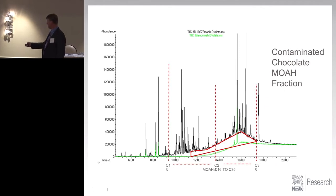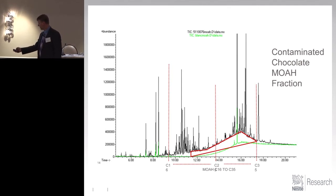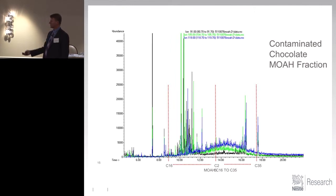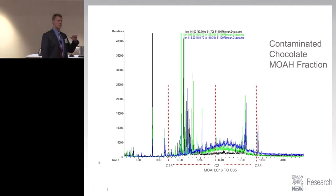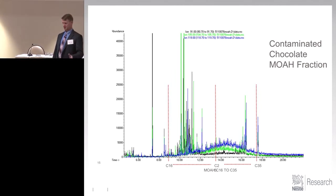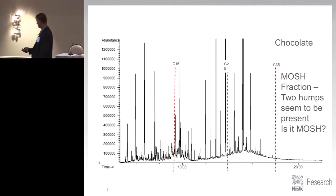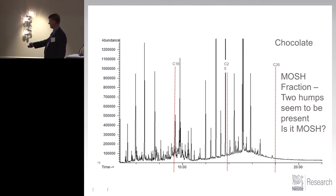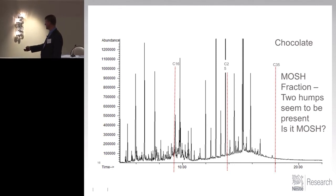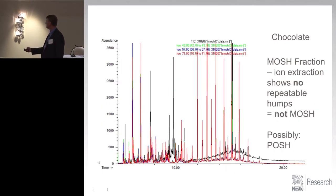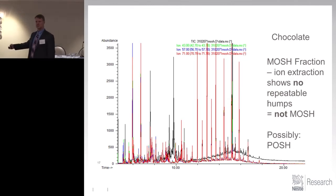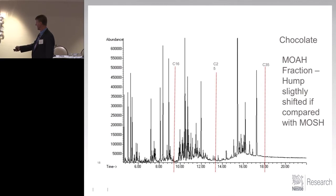This is the MOAH fraction of the same contaminant — once again, you have these nice little humps. It's a way to confirm that when you see MOAH and MOSH, you're assured you have mineral oil. When you have something like this and it's just chocolate, you have a field of peaks and think that's kind of a hump — but what does it look like when we extract the ions? The black is the TIC — the hump goes away. It's possibly POSH, certainly not mineral oil. Looking at the MOAH: once again we have something that could be a hump, but it looks pretty flat when you do the extract. So when you have no repeatable humps, you don't have any MOAH.